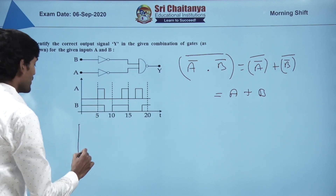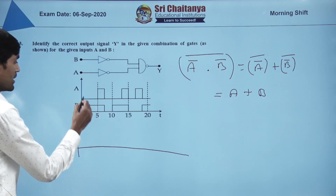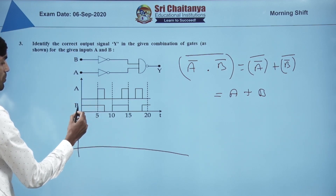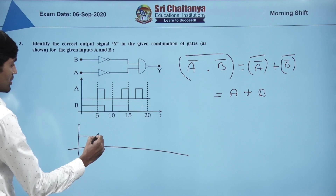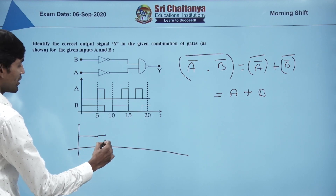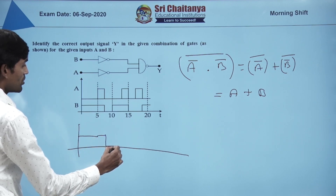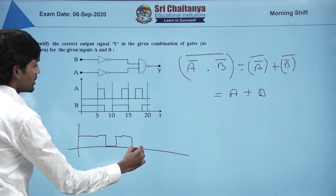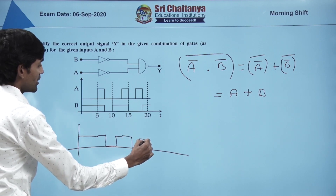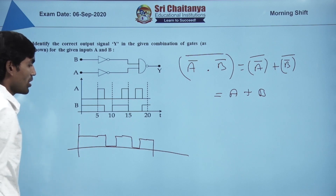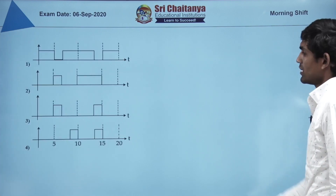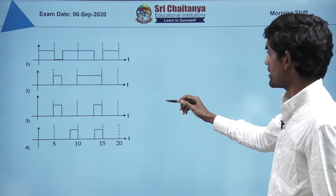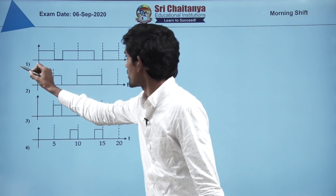The given graph would be A OR B. Here A is 0, B is 1 gives 1; here 1 and 1 gives 1; here 0 and 1 gives 1; and so on. Accordingly we can choose the correct option as the first option.